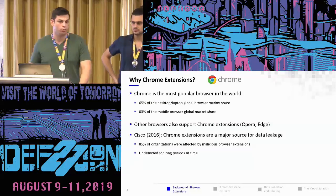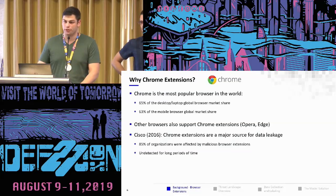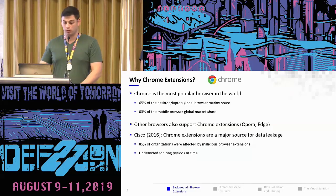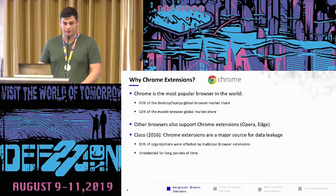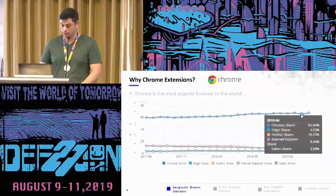Why specifically Chrome? Basically, Chrome is the most common browser, controlling over 65% of the market, and other browsers also support Chrome extensions — such as the new Edge browser and Opera, which are all based on the Chromium project. Also, a Cisco report from 2016 mentioned that Chrome extensions are one of the most prevalent sources for data leakage in enterprises, mostly due to the fact that they are undetected for long periods of time. This graph describes Chrome versus additional browsers.